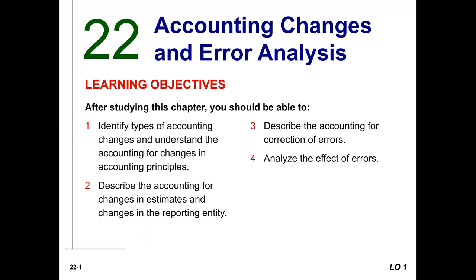Some of the learning objectives for this chapter: identify types of accounting changes and understand the accounting for changes in accounting principles. Describe the accounting for changes in estimates and changes in the reporting entity. Number three, describe the accounting for correction of errors. And learning objective four, analyze the effect of errors. We're going to be focusing mainly on the first three learning objectives. Chapter 22 starts on page 1266 of your textbook.